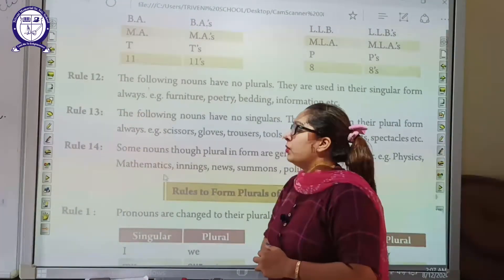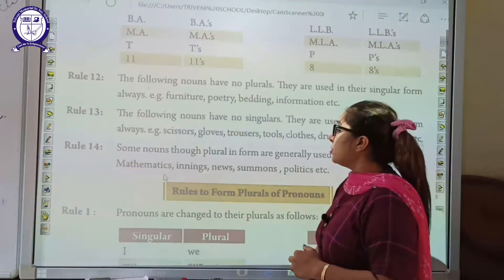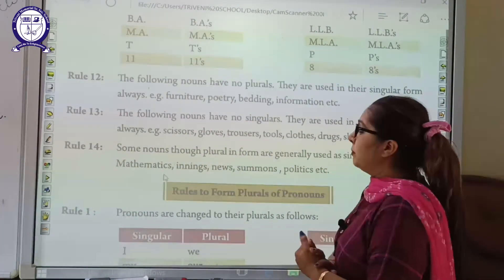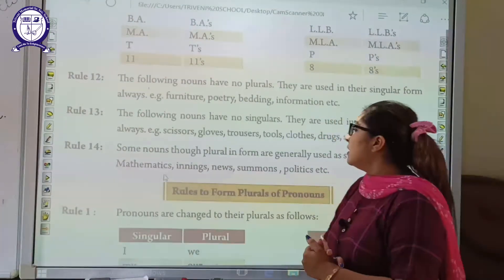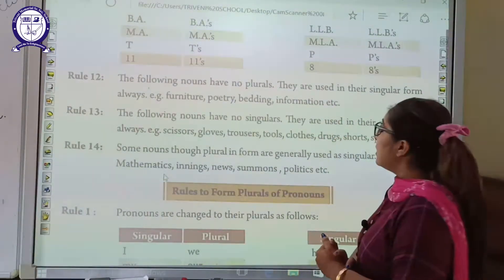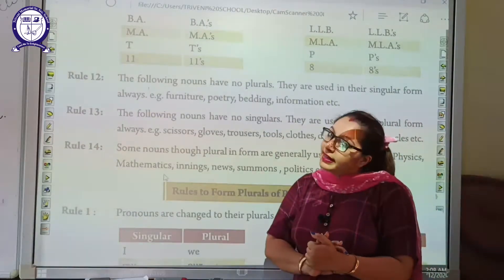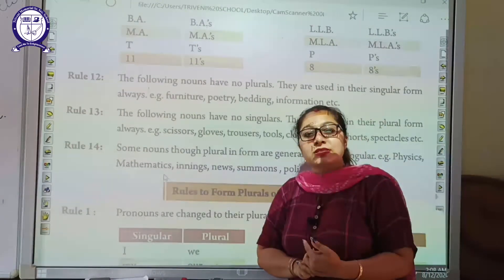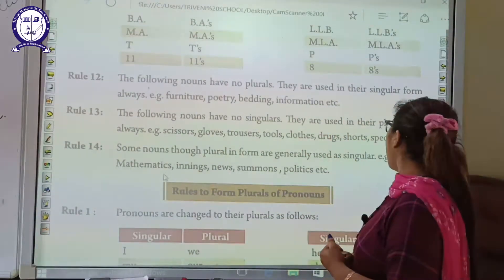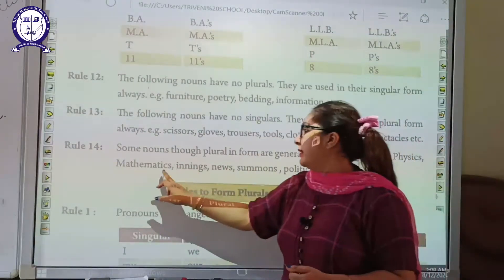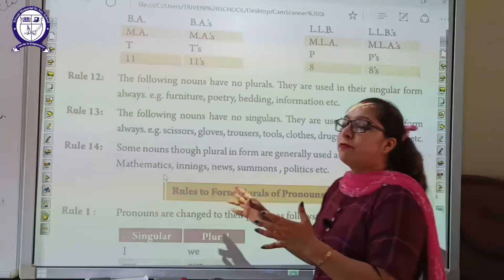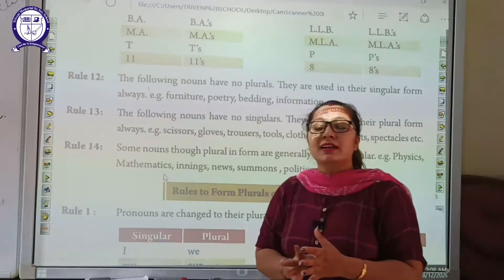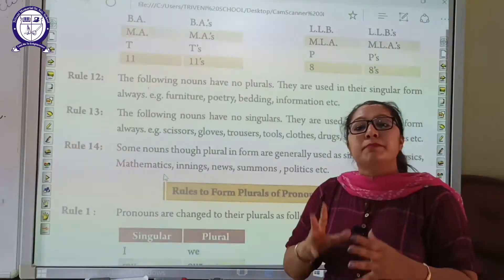Rule number 14: Some nouns that are plural in form are generally used as singular. Some nouns are already in plural form but are always used in singular form. Examples include: physics, mathematics, innings, and news. This type of word is always used in singular form despite appearing plural.